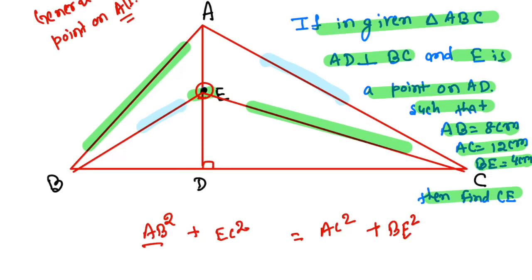We have values given. AB is nothing but 8, so 8² is 64. BE is given nothing but 4, so we have nothing but 16.